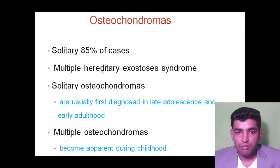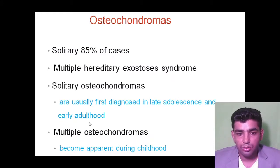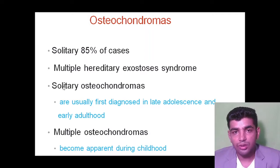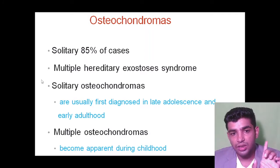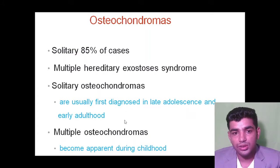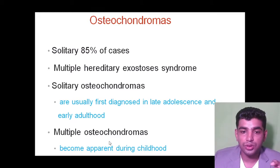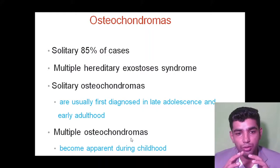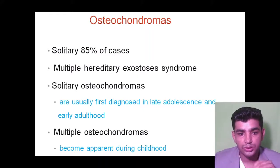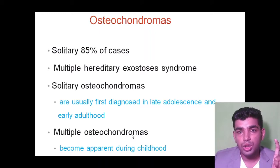Osteochondroma may be solitary or multiple hereditary exostosis syndrome. Solitary osteochondroma is first diagnosed in late adolescence and early adulthood, while multiple osteochondroma occurs during childhood. An important MCQ: multiple osteochondroma is apparent during childhood.